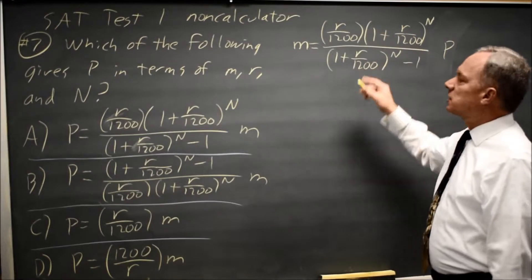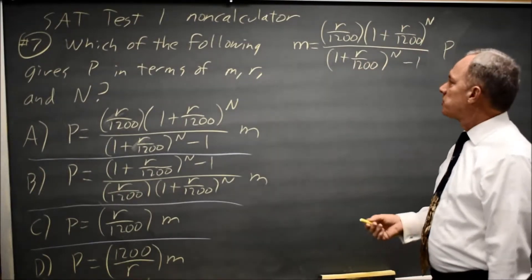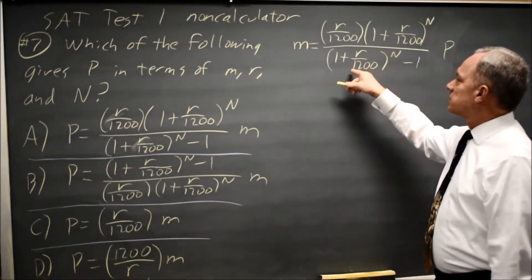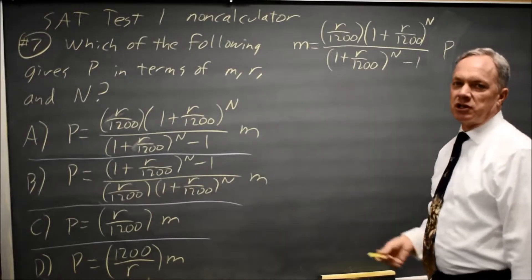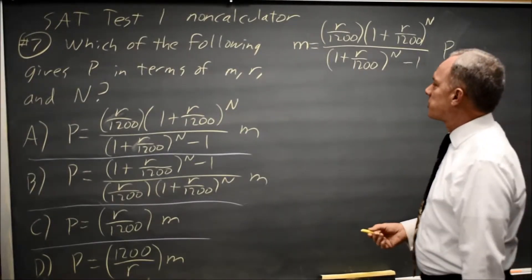So instead of trying to cancel this with this, I'm going to cross multiply. The right hand side has this whole expression for a denominator, I'm going to multiply both sides by that expression,